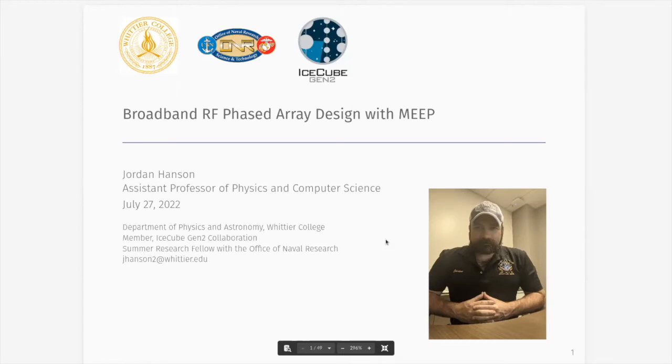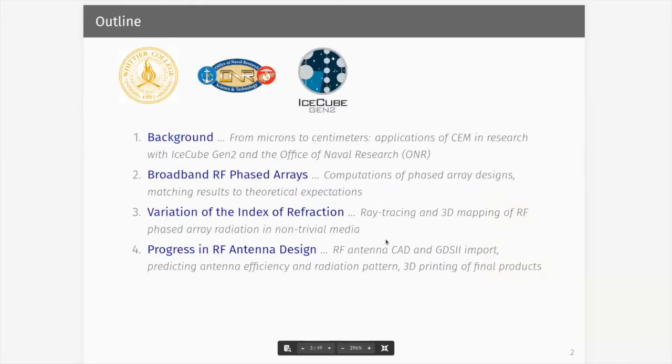So this is broadband RF phased array design with MEEP. My lecture is essentially four stories, and the first one, the background is actually quite interesting because it's like, how did I even encounter MEEP as a tool? And then we'll talk about what are broadband RF phased arrays, and one example of an application of RF phased arrays in a really unique environment where the index of refraction is not a constant, and that happens to be Antarctic ice. And then we'll conclude with progress in RF antenna design facilitated by MEEP.